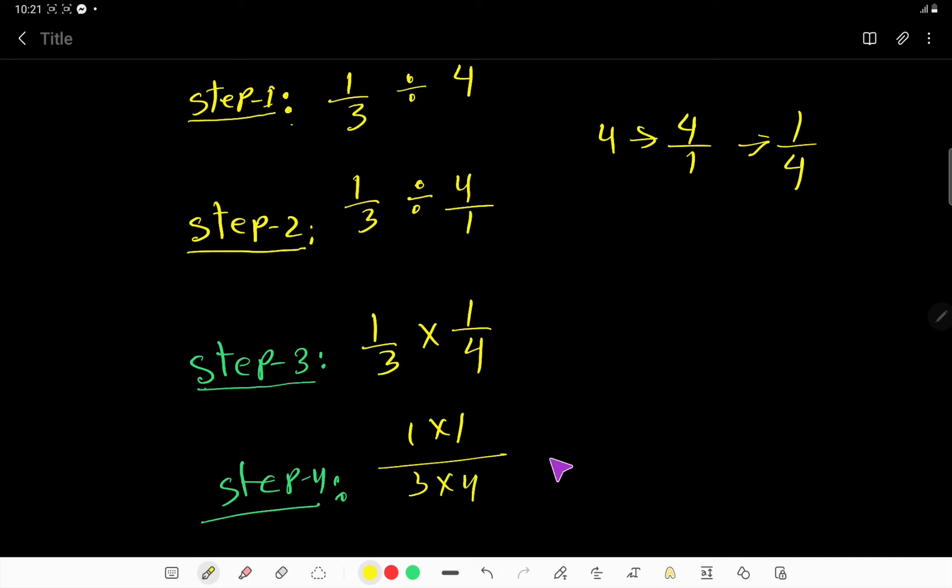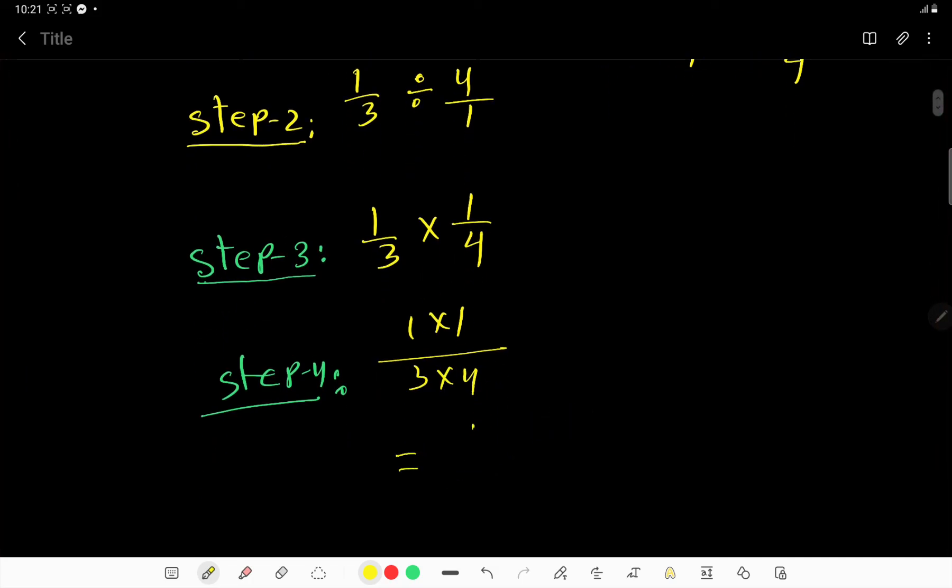So we are getting one over three times four equals twelve in the denominator. The answer is one over twelve. Thank you for watching this video.